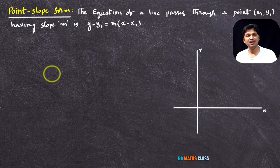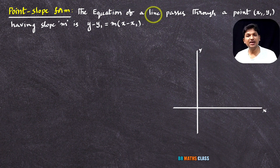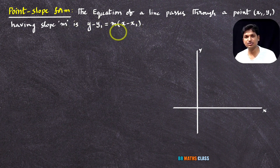Hello friends, I am Balaji Rao. Welcome to BRMAX class. In this class, we will learn the derivation of point slope form. The equation of a line that passes through a point x1, y1 and having slope m is y minus y1 equal to m into x minus x1.